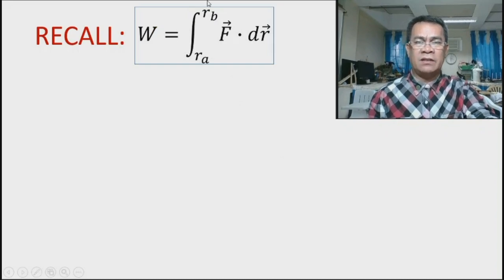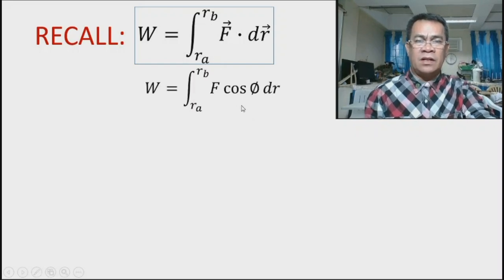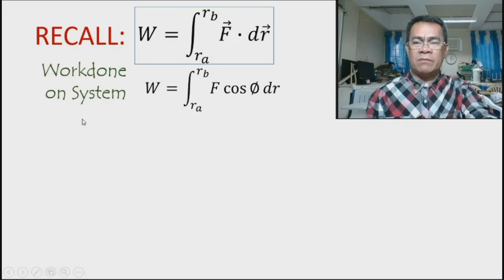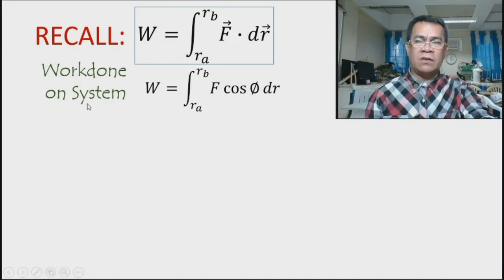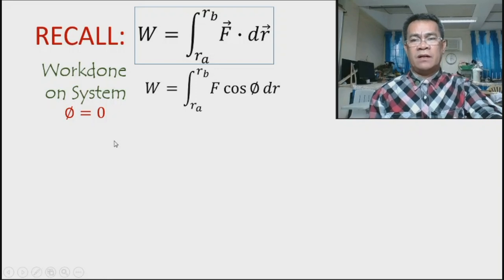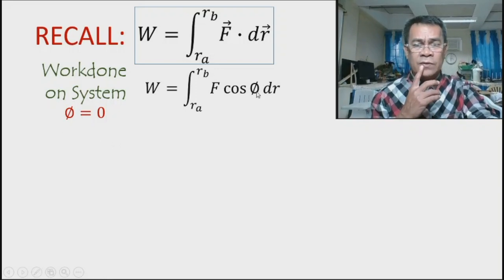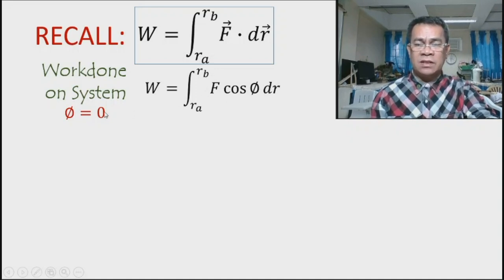Recall the work done by a force: it is the integral from initial to final position of F dot dr. Because of the cosine, we write it as the integral of F cosine θ dr. Now our wish is to calculate the work done on the system. Unlike before where we looked at work done by elastic force, this time we calculate the work done on the system. Since force is in the same direction as displacement, θ is zero.